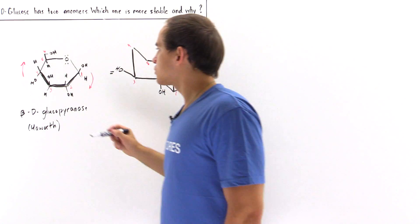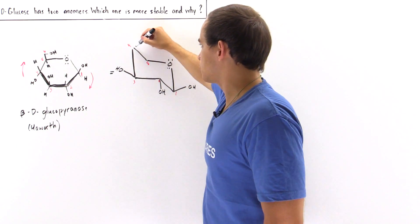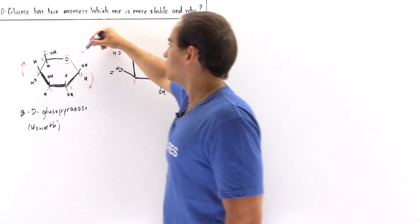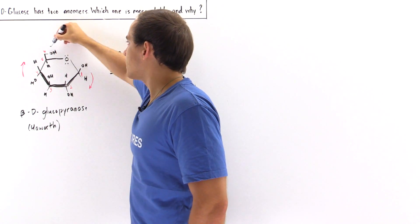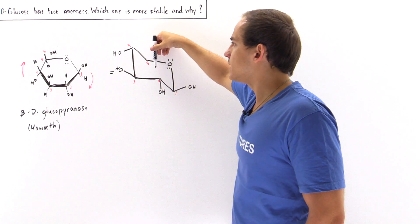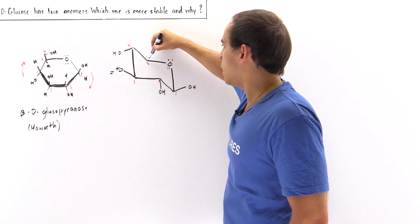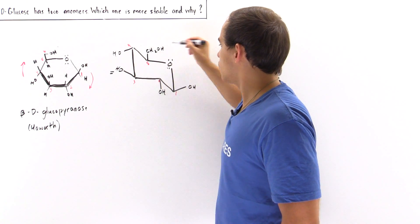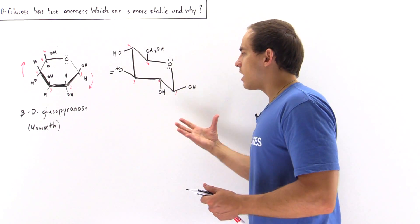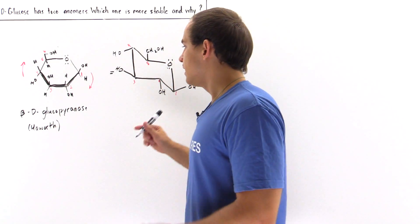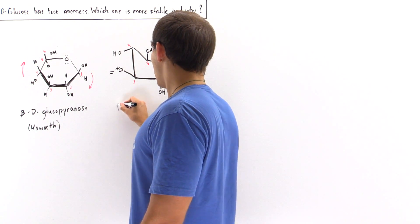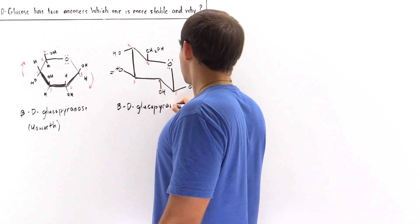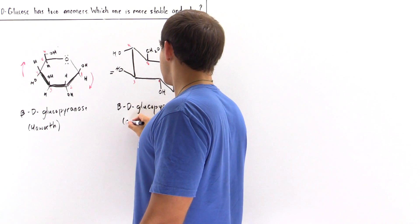On carbon four, the hydroxyl points downward, and the downward direction on carbon four in the chair conformation is axial. On carbon five, the primary alcohol group points upward, and the upward direction is equatorial. This is the orientation of all the groups for the chair conformation of beta-D-glucopyranose, and this is the more stable chair conformation.